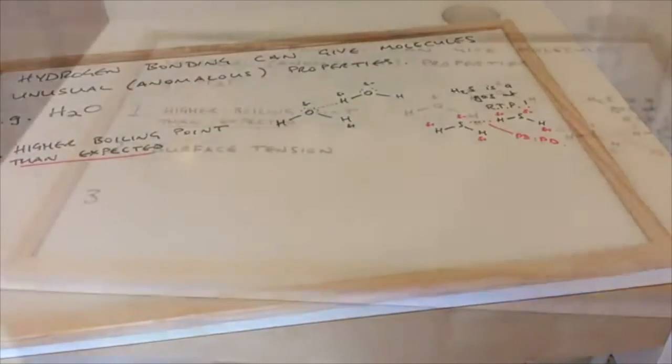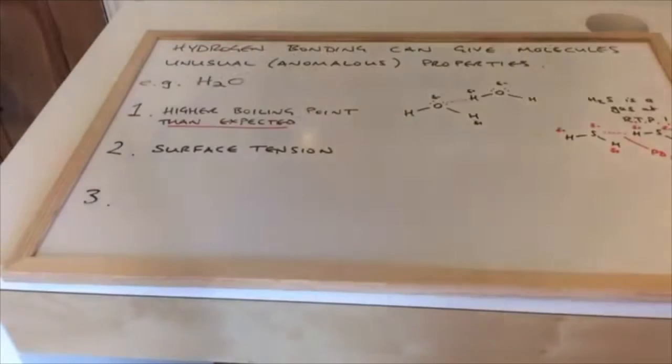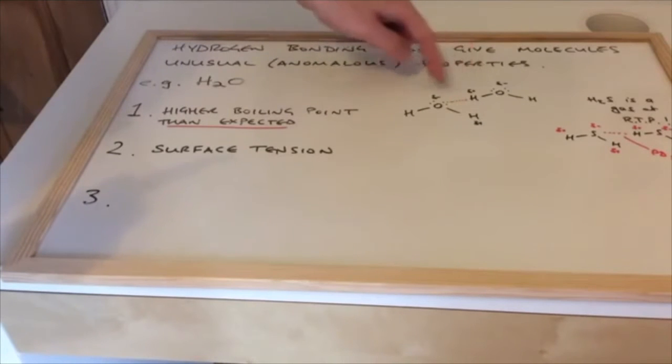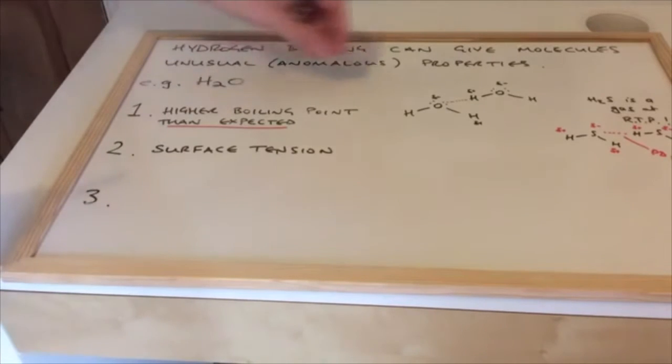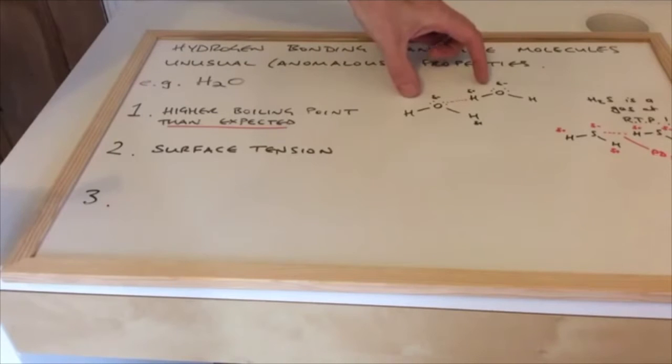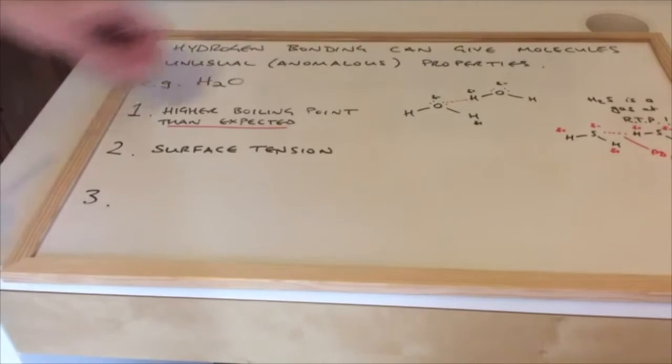The second anomalous property of water is that it has surface tension. So again, I'll just use the same diagram here. If you imagine a very small insect like a pond skater or something like that, the water molecules are held together by these hydrogen bonds to such an extent that these creatures